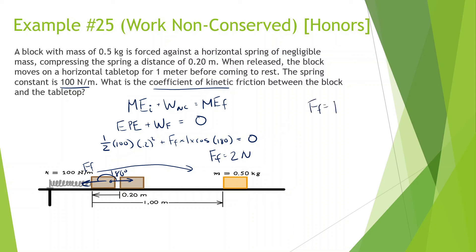Force of friction equals normal force times mu. We're looking for mu. So 2 equals normal force — which equals force of gravity in this case, 0.5 times 10 equals 5 — times mu. So mu equals 2 divided by 5, which gives 0.4.